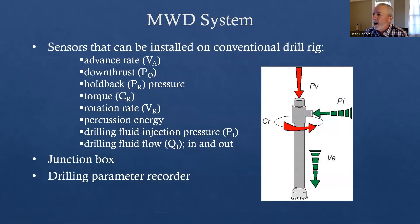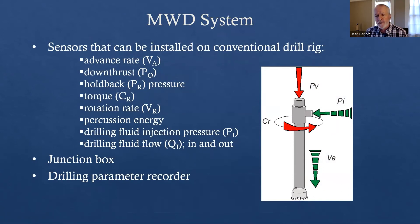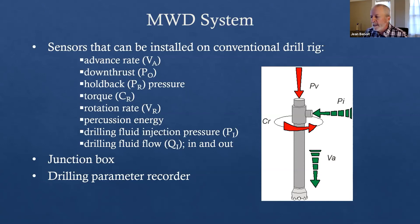The list of parameters that can be installed includes: the advance rate, the down thrust, the hole back pressure — essentially measuring pressure on both sides of the pressure cylinder, useful when you start getting deep and might have to hold back some pressure — the torque, the rotation rate, the percussion energy if using a percussion rig, and the drilling fluid injection including mud pressure and mud flow. You have a junction box where all of these things get connected, and then you have the drilling parameter recorder — the little computer — where all the information is displayed and stored.